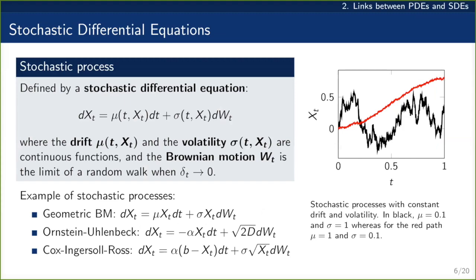I'll try to define some links between PDEs and SDEs, but first I want us all to be on the same page, so I'll define a stochastic process. A stochastic process can be defined by its stochastic differential equation: this object has a drift term and a volatility term. The drift term is associated with dt, a discretization in time, and dW_t is the discretization of Brownian motion — basically the limit of a random walk as time goes to zero.